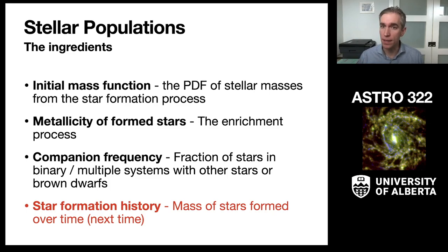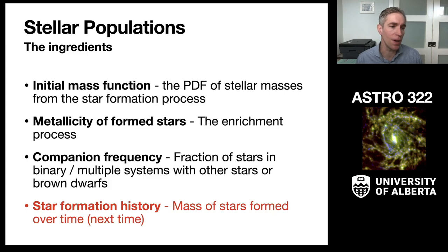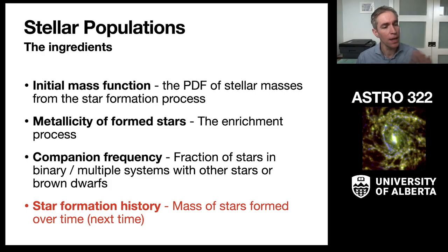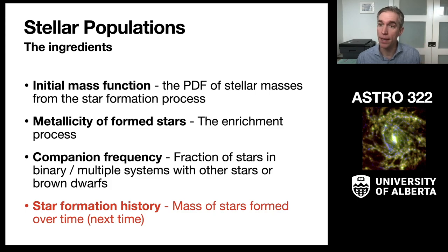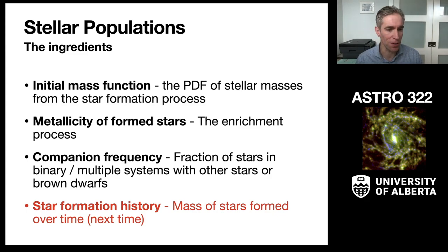This does not look like the stellar evolutionary tracks we saw earlier, because the stars are all at different ages and different masses, giving us a big ensemble in different parts of the HR diagram. There are several ingredients that go into stellar populations. Today we'll cover the first three, and then add in the star formation history and work on more realistic stellar populations next week. We'll talk about the initial mass function, metallicity, and companion frequencies.